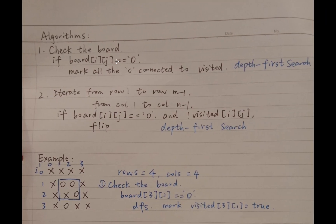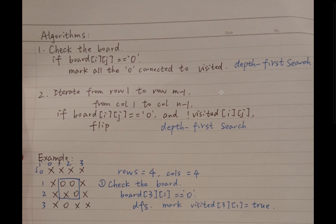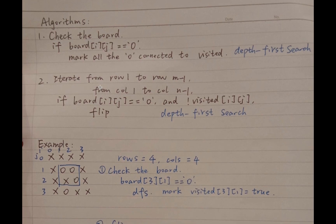So let's see the algorithm. First, we check the border. If the border cell i,j equals O, we mark all the O's connected to this O as visited — here we do a depth-first search. The second step is to iterate from row 1 to row n-1, from column 1 to column n-1. If board i,j equals O and we haven't visited before — meaning it doesn't connect to the border — we flip the O to X, and also do a depth-first search.